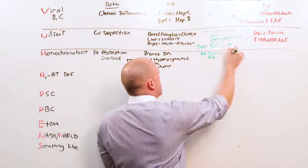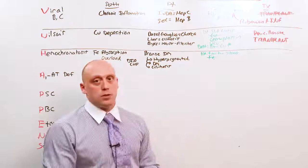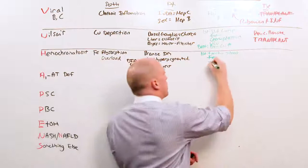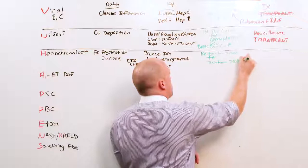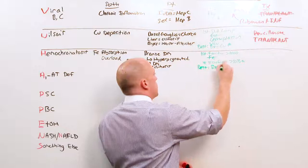The first test you should get is a ferritin. And a ferritin greater than a thousand, in the absence of inflammation or hepatic necrosis is largely suggestive of hemochromatosis. Now they will not make you choose between the two of them. But just in case they do, the transferrin saturation greater than 50% is better. But often the ferritin is what they're going to give you to tell you, hey, this is hemochromatosis.